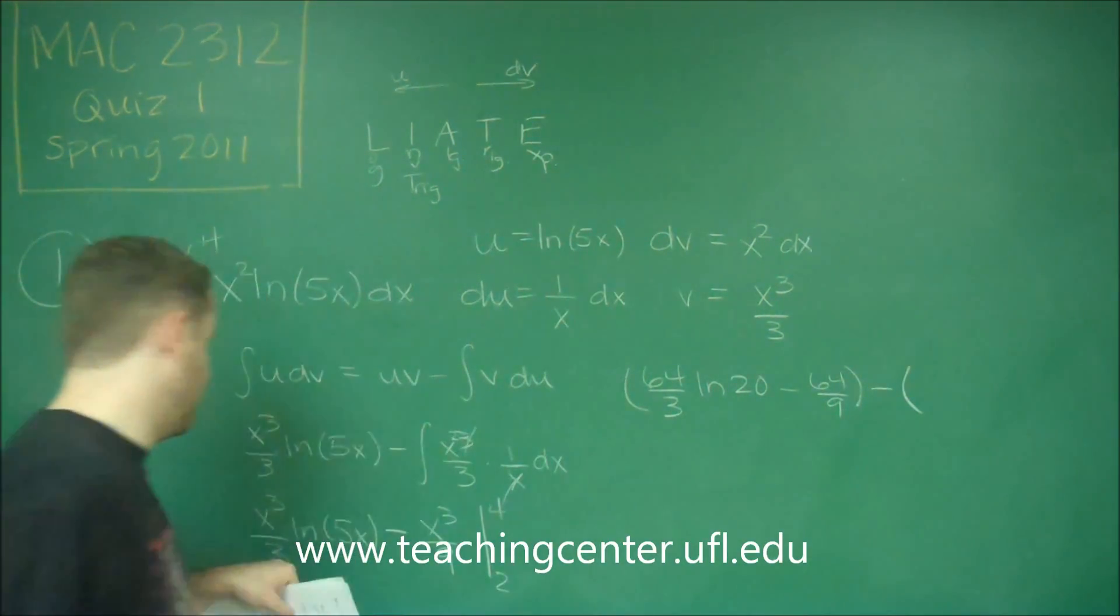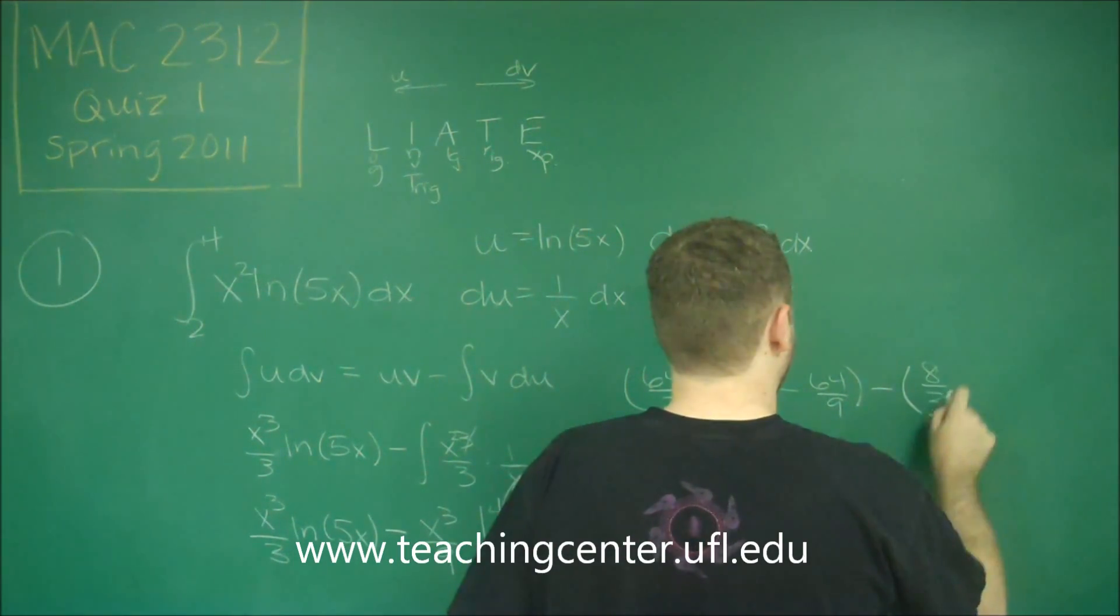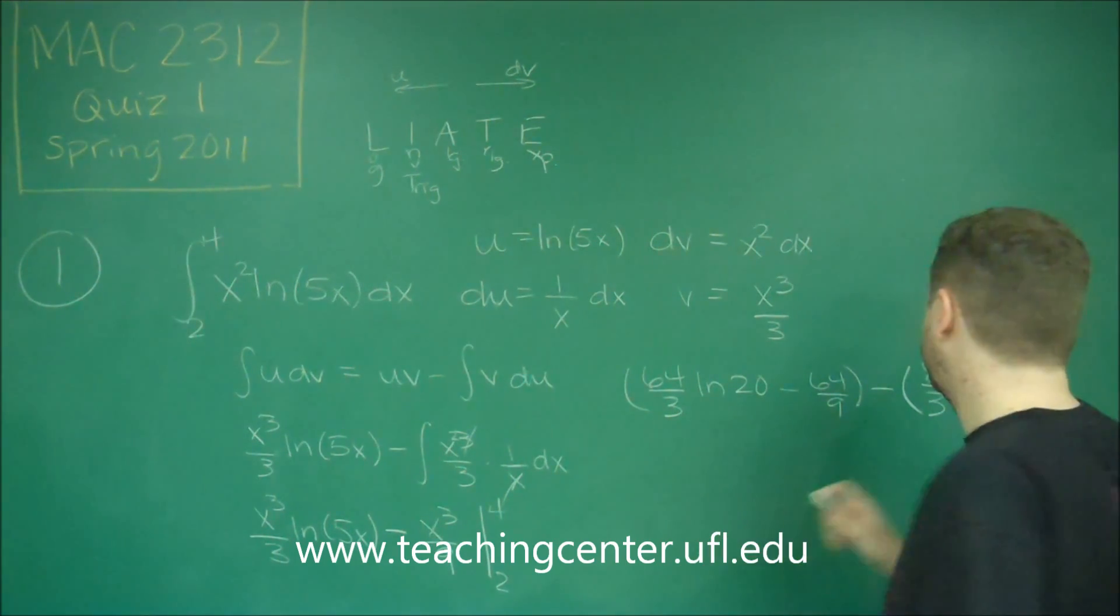Minus, now, what we get when we plug in 2. So we're going to get 8 over 3, ln of 5 times 2, so ln 10. Minus, 2 cubed over 9, 8 over 9.